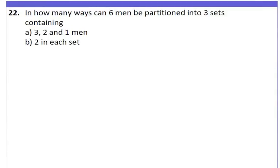In how many ways can six men be partitioned into three sets containing three, two, and one men? Suppose the men are labeled as one, two, three, four, five, six. Let these numbers be their labels.